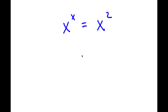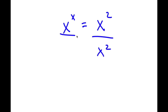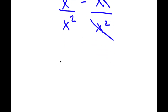In this problem, I have x to the power of x is equal to x to the power of 2. To solve this, I'm going to first start by dividing both sides by x to the power of 2. These two cancel out, and now I'll be left with x to the power of x over x to the power of 2 is equal to 1.